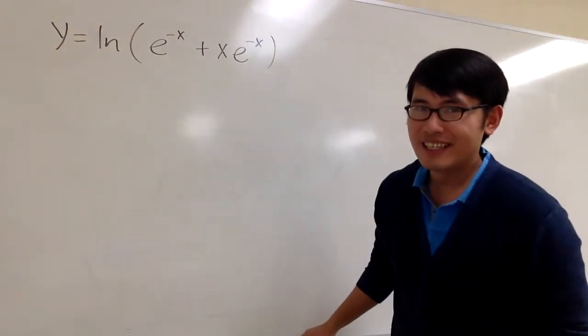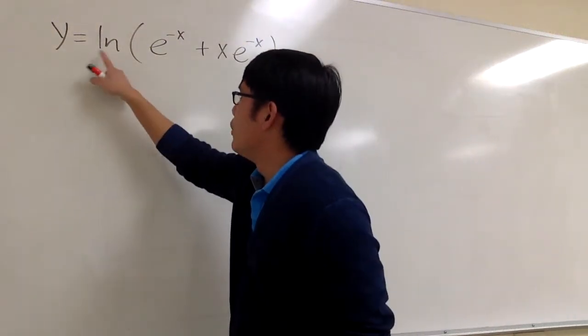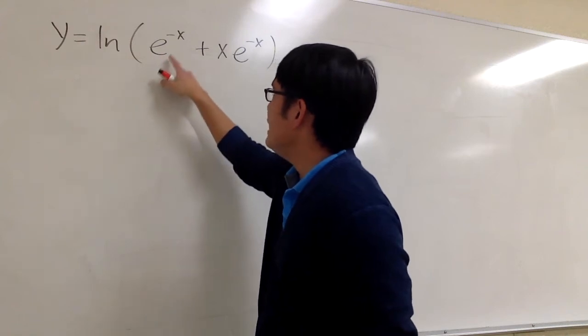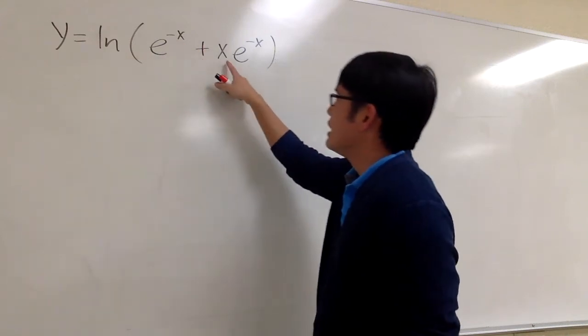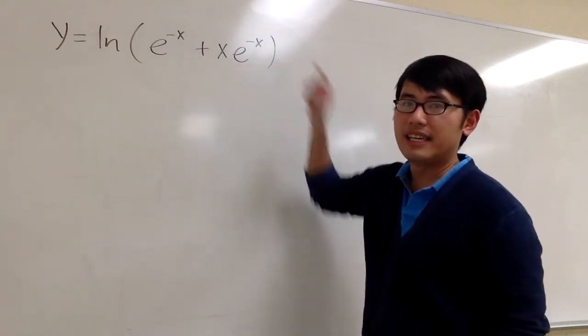This question is going to be fun. We're looking at the equation y is equal to ln of e to the negative x plus x times e to the negative x.